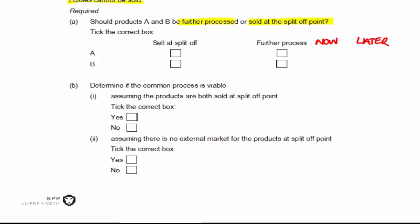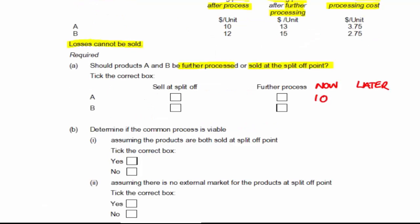Now, if we sell it now, then A is going to give us $10 and B is going to give us $12. However, if we sell it later, we are going to get $13 and $15. But we're going to have to incur some more cost to get there. So $13 minus $3.75 cost gives us $9.25. And $15 minus $2.75 gives me $12.25. So let's take A first and we can see the higher is going to be $10. And that means that the correct answer would be to sell it at the split off point.